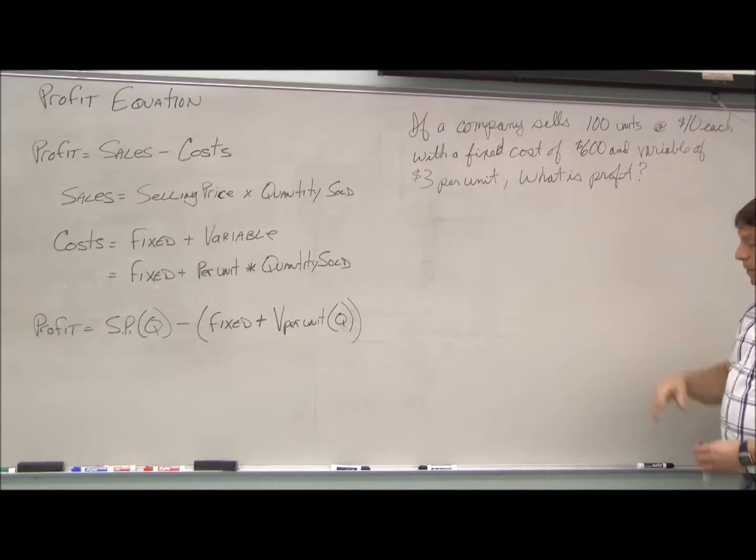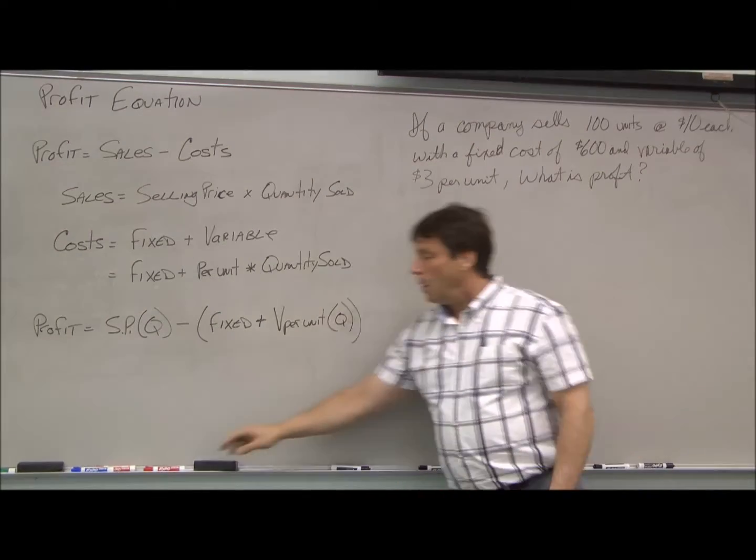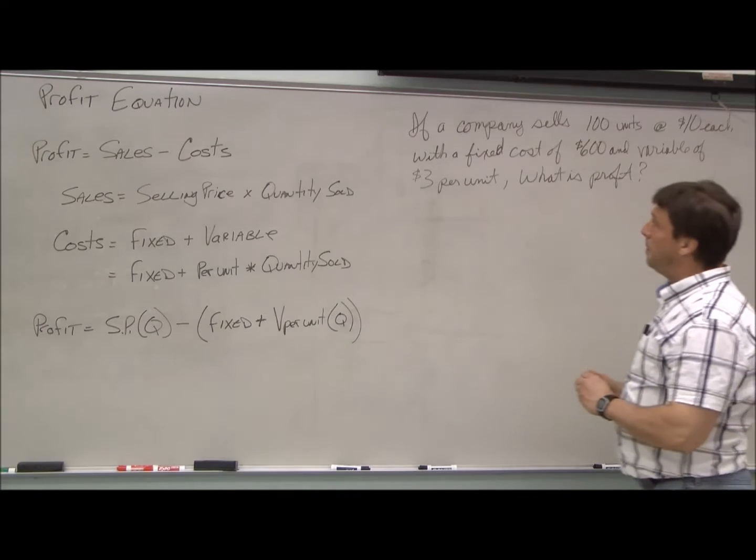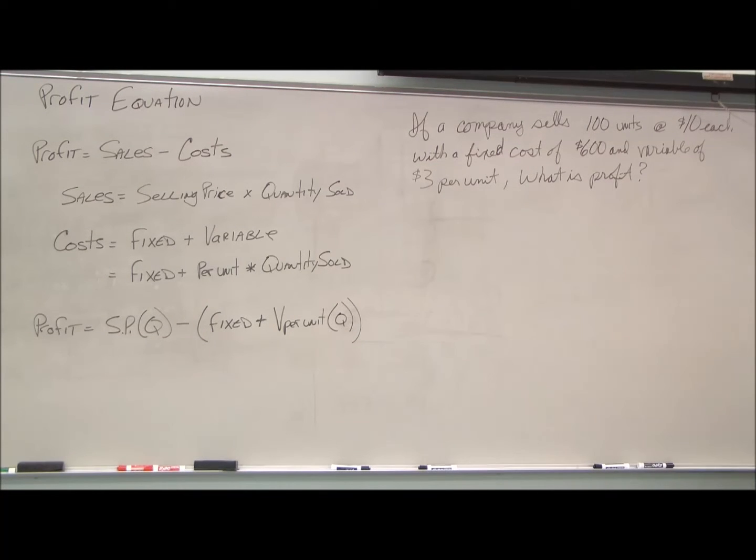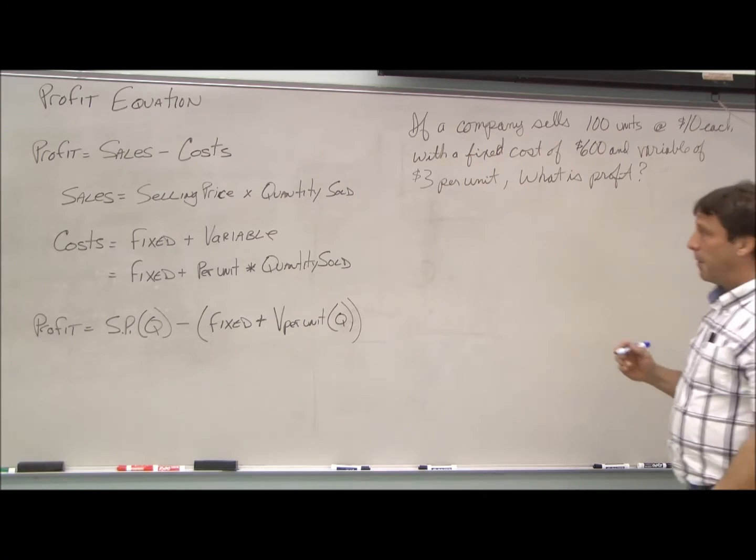Just to illustrate the example here, we have a company that sells 100 units at $10 each with a fixed cost of $600 and a variable cost of $3 per unit. So we want to know the profit.